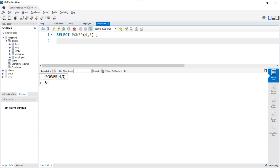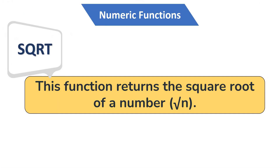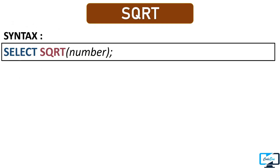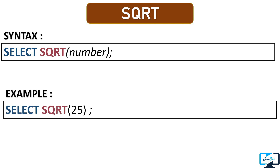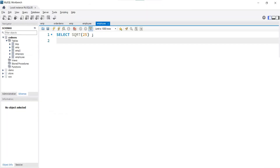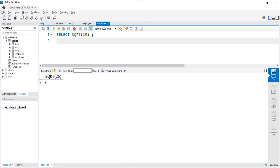Our next numeric function is SQRT, which means square root. It is clear from the name that this function finds the square root of a number. We only need to pass the number for which we want the square root. For example, passing 25 — after executing the query, we get 5 in the output, which is the square root of 25. It is very easy to use the square root function.